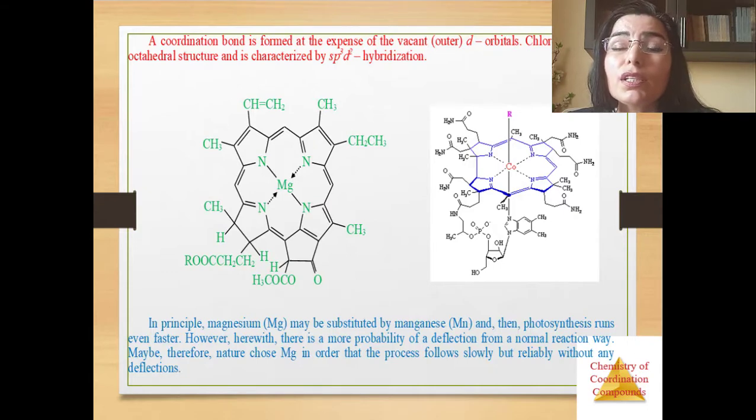The cyano groups are in its molecule, therefore it is called cyanocobalamin. However, the derivatives, homologues of B12, do not influence the organism and for this reason are called pseudovitamins.